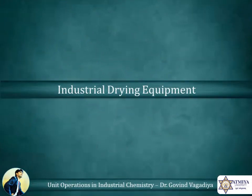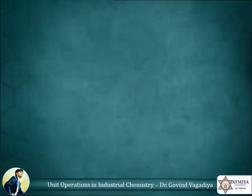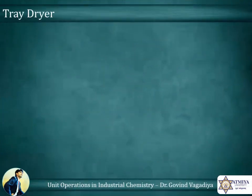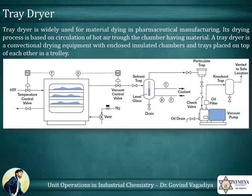One example of a dryer is the spray dryer. The tray dryer is widely used for material drying in pharmaceutical manufacturing. Its drying process is based on circulation of hot air through the chamber containing the material. A tray dryer is a conventional drying equipment with enclosed insulated chambers and trays placed on top of each other in a trolley.